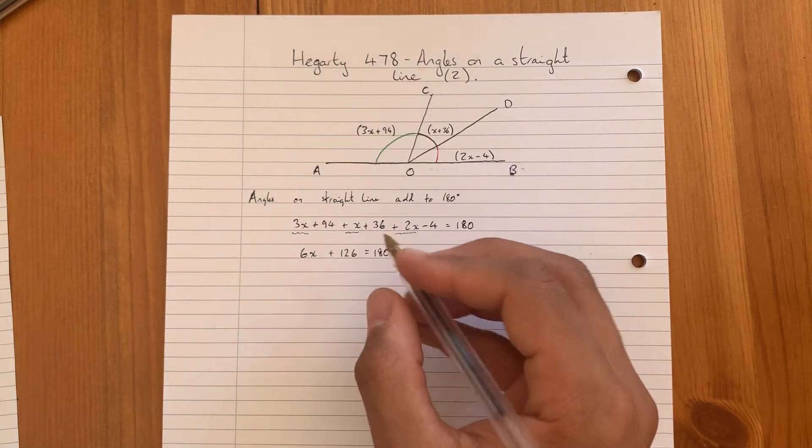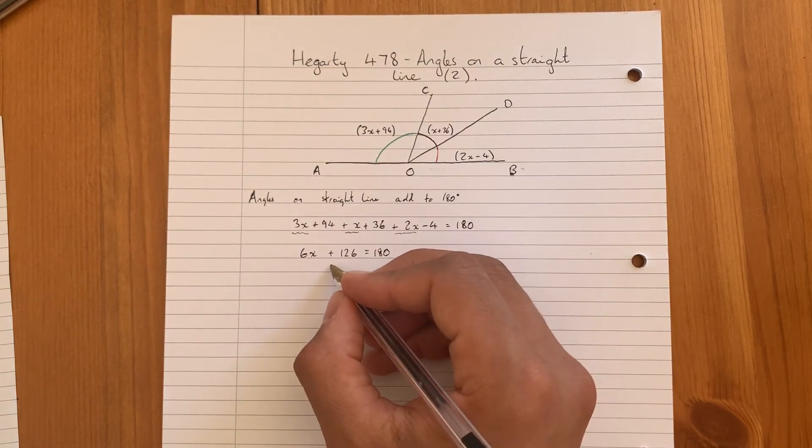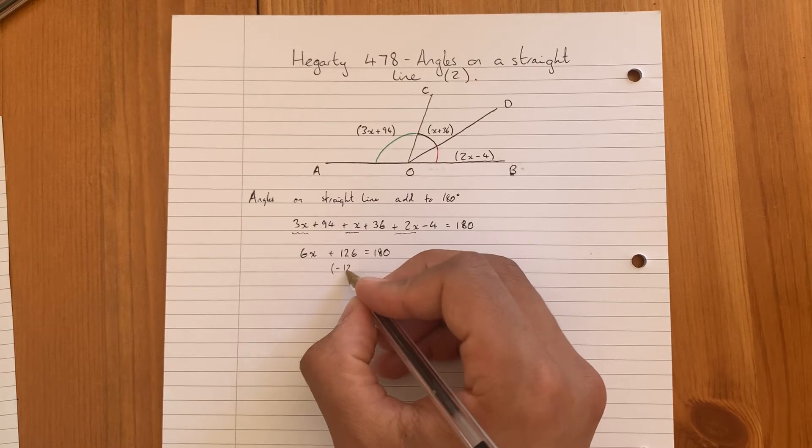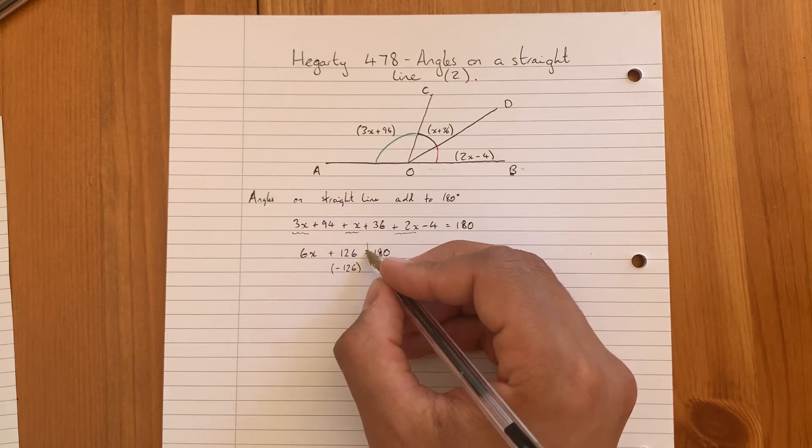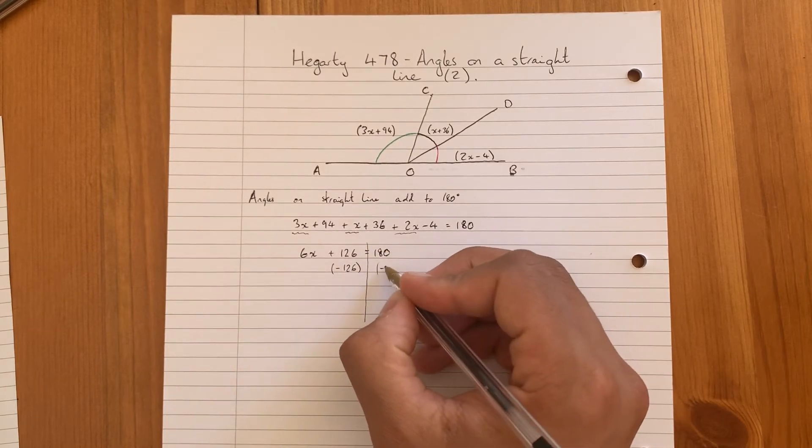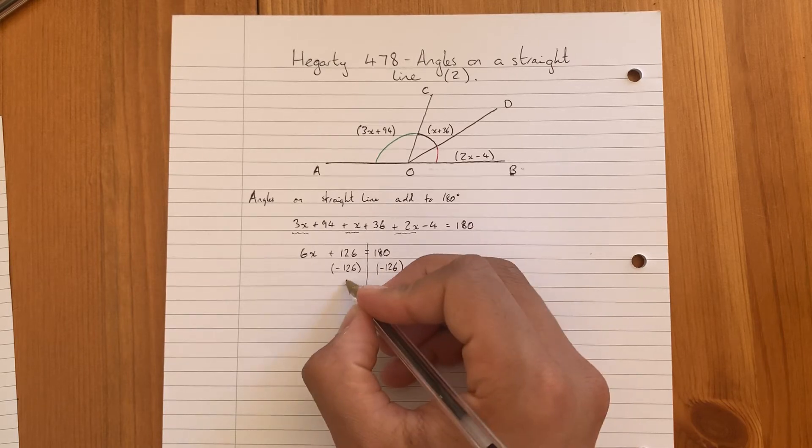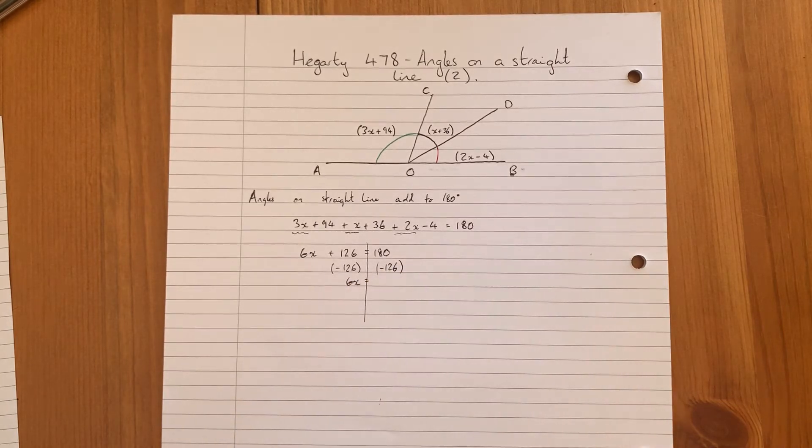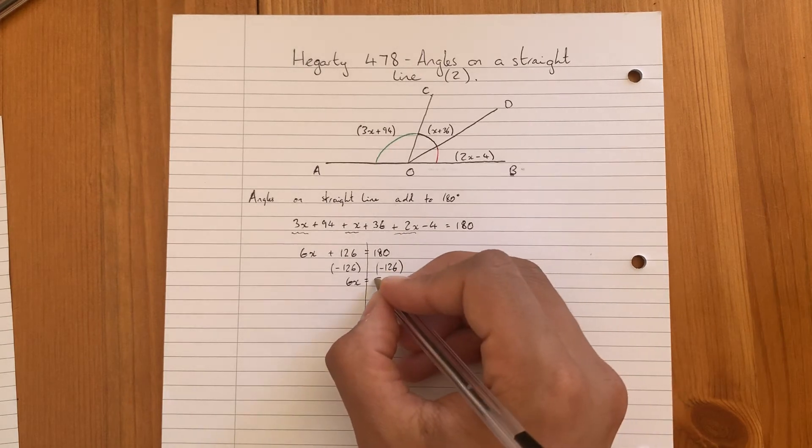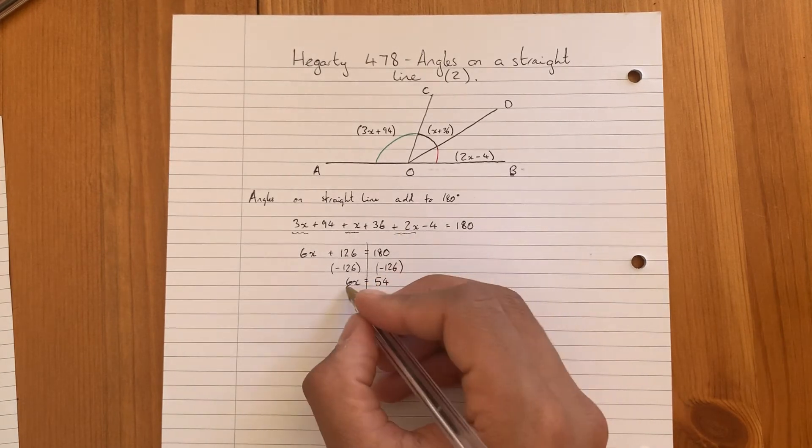If you prefer, you can put a line down, subtract 126, which leaves us with 6x equals 54. Then we divide both sides by 6, which leaves us with x equals 9.